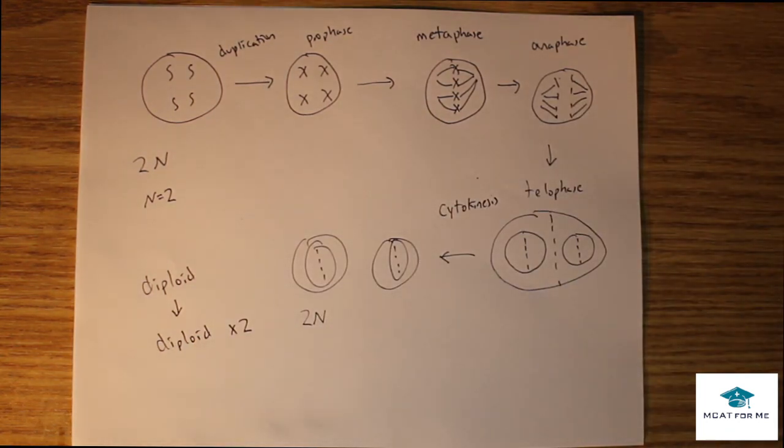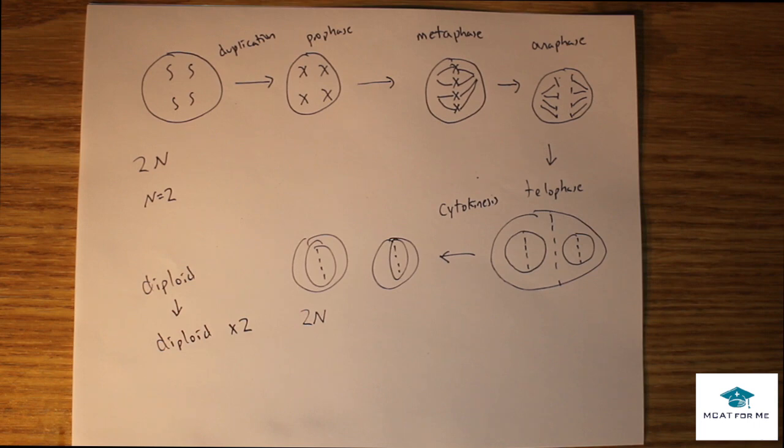In mitosis, all we're doing is duplicating a cell and we're getting the same copy of the exact same cell. That's what we have to remember. In mitosis, everything's the same. Versus meiosis, it's a little different. We're going to have unique cells and they're not going to be diploid, they're actually going to be haploid. And we'll see that in another lecture.